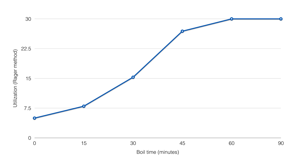This is used in the Rager method, and other methods have similar curves. While we're adding bitterness, there are competing forces removing it. When we're starting out, there's plenty of alpha acids to convert and the competing processes aren't contributing as much to your beer flavor. The longer we boil, the less alpha acids there are and the reduction forces start to work against us.